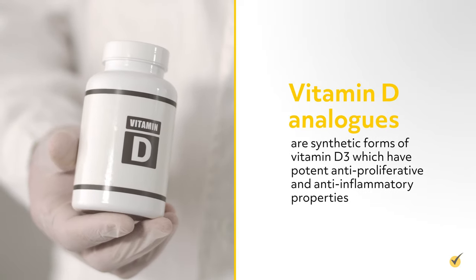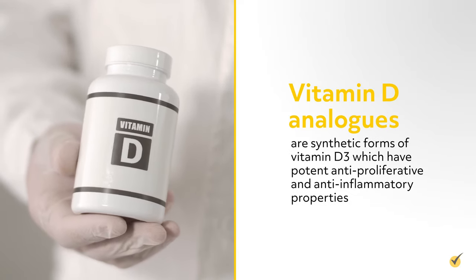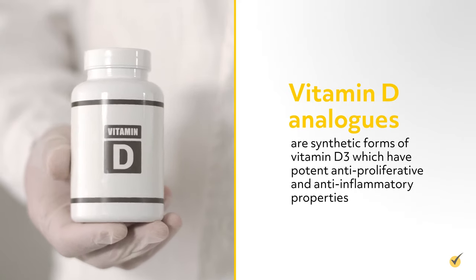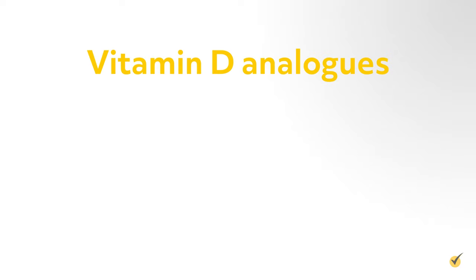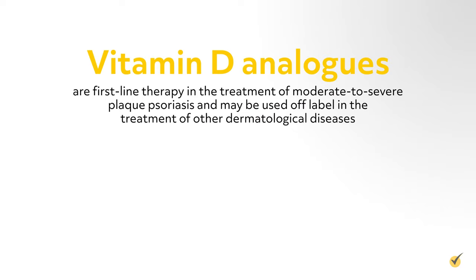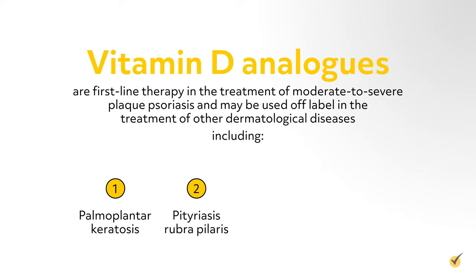Let's take a closer look at two common topical treatments: vitamin D analogs and sunscreens. Vitamin D analogs are synthetic forms of vitamin D3, which have potent anti-proliferative and anti-inflammatory properties. They are first-line therapy in the treatment of moderate to severe plaque psoriasis and may be used off-label in other dermatological diseases, including palmoplantar keratosis, pityriasis rubra pilaris, vitiligo, and ichthyosis.